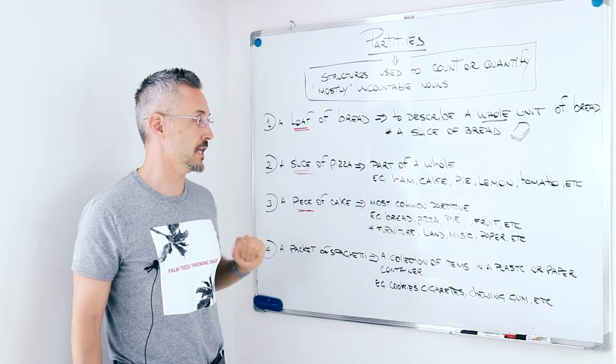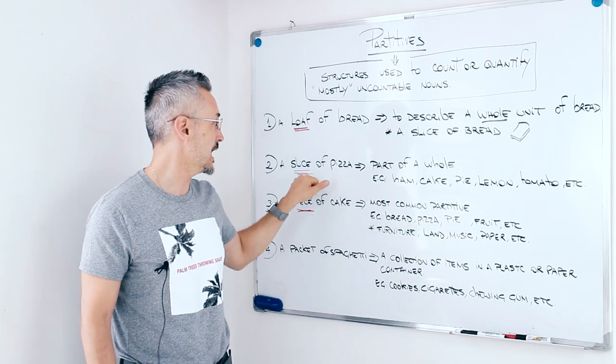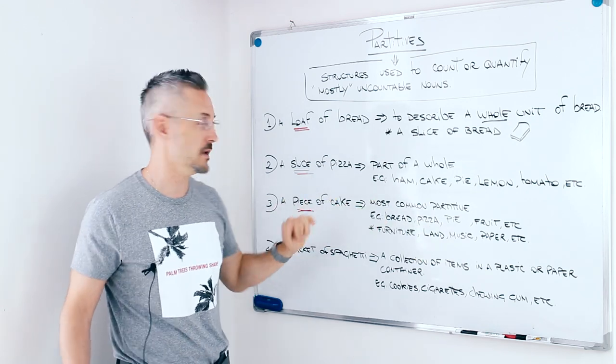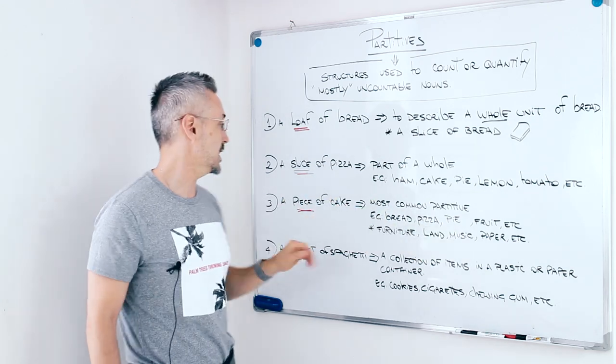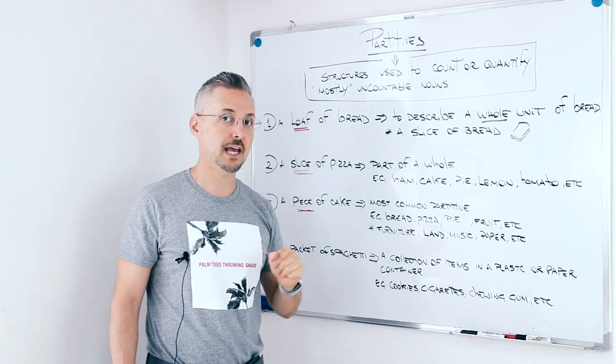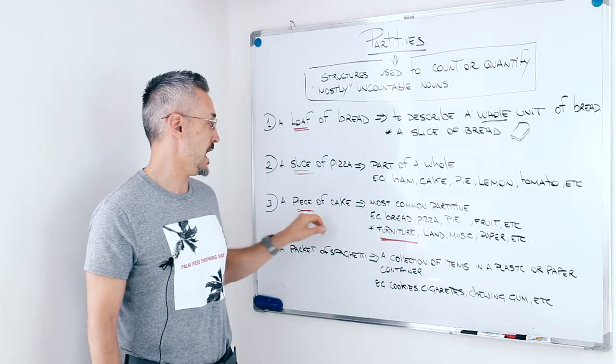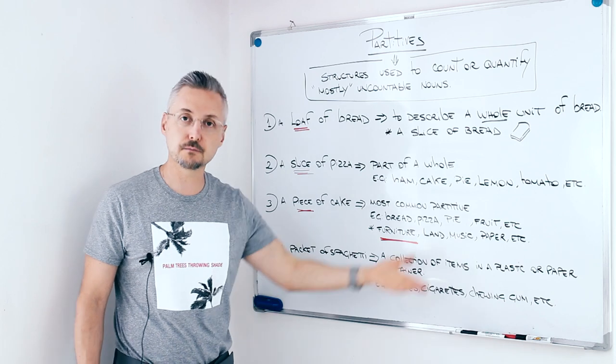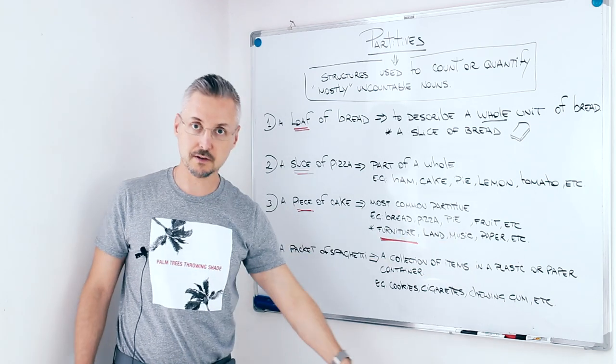A piece of bread, we can say. A piece of pizza, like a slice of pizza, is the same. A piece of pie, a piece of fruit, a piece of furniture, a piece of land, a piece of music, a piece of paper, etc.